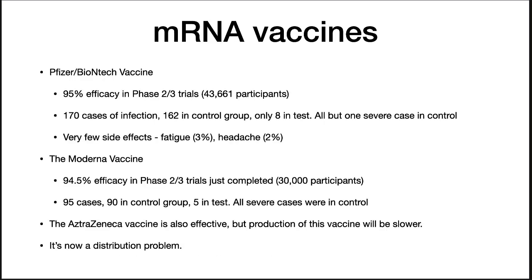The mRNA vaccines from Pfizer-BioNTech and Moderna are spectacularly effective. The Pfizer-BioNTech vaccine showed 95% efficacy in combined phase two and three trials of over 40,000 participants, reporting 170 infections with all but eight in the control group, and 10 severe cases with all but one in the control group. Subsequent use has shown them to be incredibly protective against both the original SARS-CoV-2 virus and all variants, including the Delta variant.